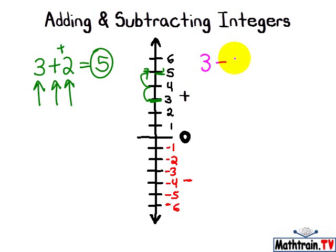3 minus 2 means we start at 3, that's positive 3, and we subtract 2, subtract 2 positives, so we go 1, 2, and we end up at 1.